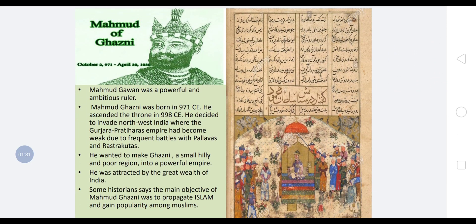Mahmood of Ghazni was a powerful and ambitious ruler, born in 971 CE. He ascended the throne in 998 CE and decided to invade North West India, where the Gurjara Pratihara empire had become weak due to frequent battles with the Pallavas and Rashtrakutas. He wanted to transform Ghazni — a small, hilly and poor region — into a powerful empire, and was attracted by the great wealth of India.